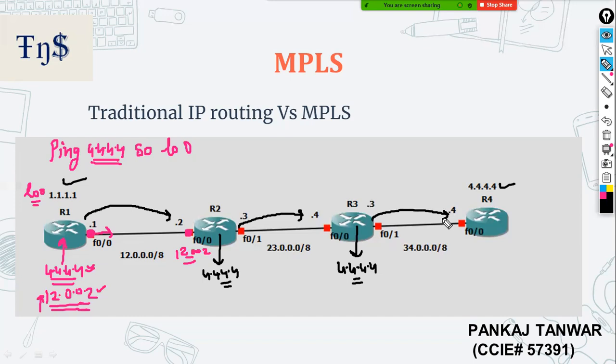In traditional IP routing, if 4.4.4 is not present in R2's routing table, then 1.1.1.1 and 4.4.4.4 cannot communicate — the traffic will be dropped as soon as the packet reaches R2. Or if R2 has the route but R3 doesn't, then R3 will drop the packet. The destination must be present in the routing table of every hop along the path.